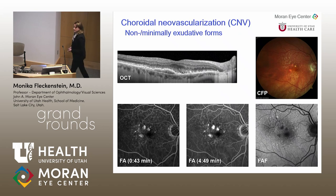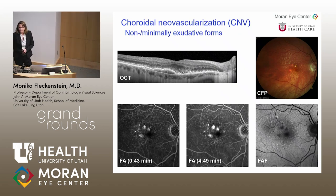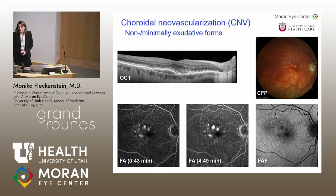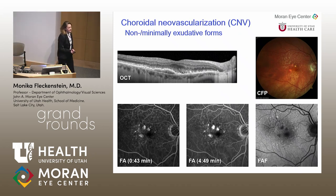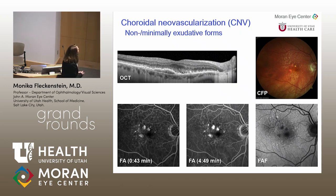Now I would like to come to another type of vascularization — not the original choroidal vascularization but choroidal neovascularization. On OCT, we see a separation between Bruch's membrane and the RPE, and we see some subretinal fluid.